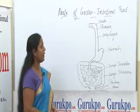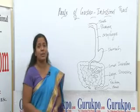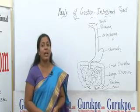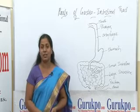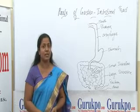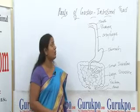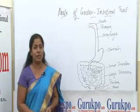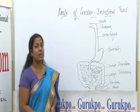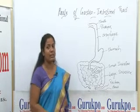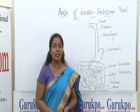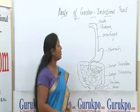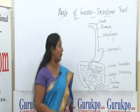The next part is the pharynx, which is 12 centimeters long, and it is divided into 3 parts: nasopharynx, oropharynx, and laryngopharynx. The next part is the esophagus, which is 13 centimeters long, and it continues with the stomach.